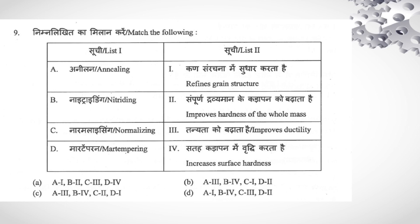And for martempering, martempering is an interrupted quenching process. In term martempering, it improves hardness of the whole mass. So A with improved ductility, A with triple I, so you can cut A and D. A with triple I, then nitriding, it is a surface hardness, so it increases surface hardness, B with IV. B with IV, here also B with IV. Then normalizing, normalizing refines grain structure, C with 1. C with 1, here C with 2, so you can cut C. B is your correct answer.